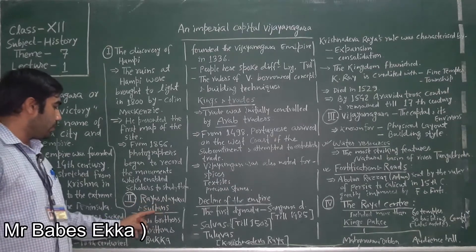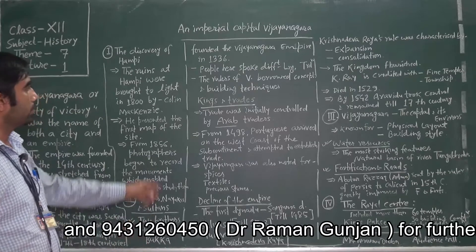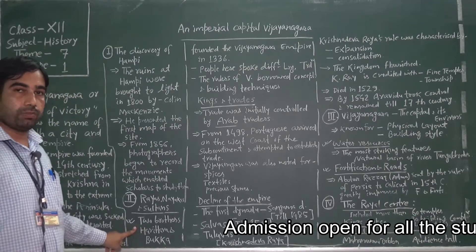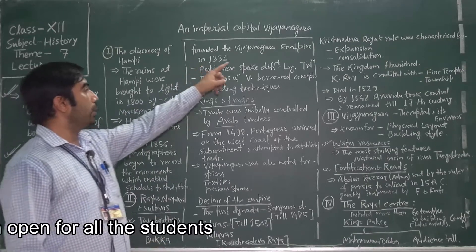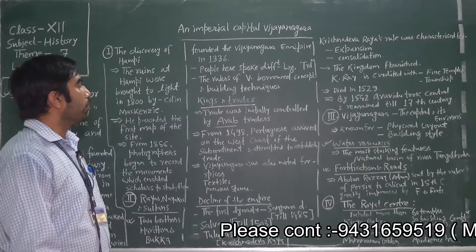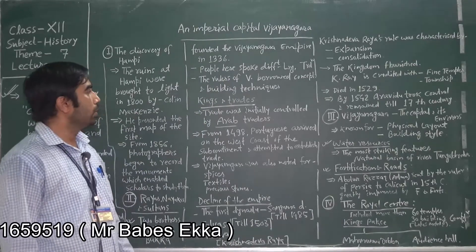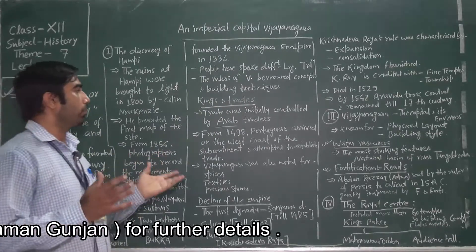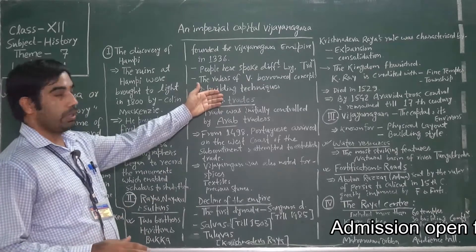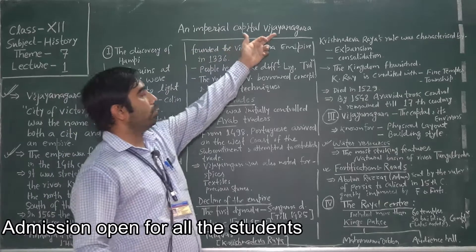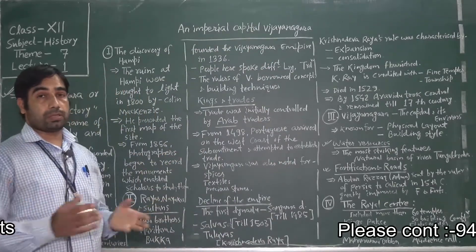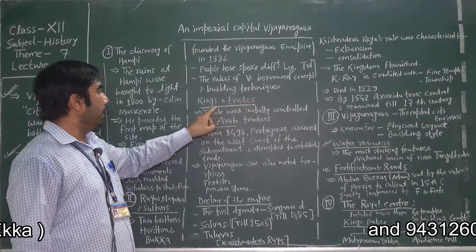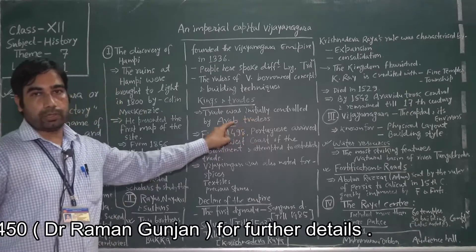Coming to Rayas, Naikas and Sultans — two brothers, Harihara and Bukka, founded the Vijayanagara Empire in 1336. This is very important; objective questions may be asked from here. People here spoke different languages and different traditions. The rulers of Vijayanagara borrowed concepts and building techniques. This is why, whenever we discuss this particular empire, you will come across lords of temples, building complexes, monuments, etc.